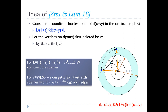For L ranging from 1 to 2nw, multiplied each time by a factor of (1+ε), we construct such a spanner. Finally, by letting ε' = ε/(2k), we get a (2k+ε) stretch spanner. The number of scales is O(k/ε · log(nw)), and every time the number of edges we add is O(n^{1+1/k}), so the total size is O(k/ε · n^{1+1/k} · log(nw)). This is the idea of the Zhu and Lam paper.